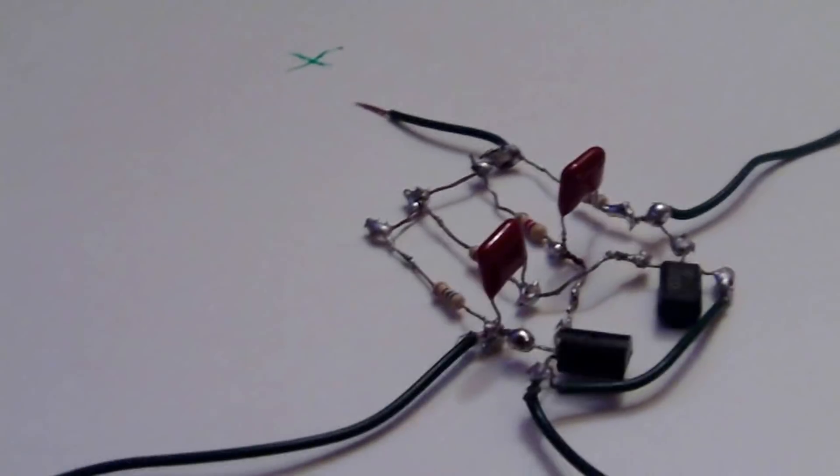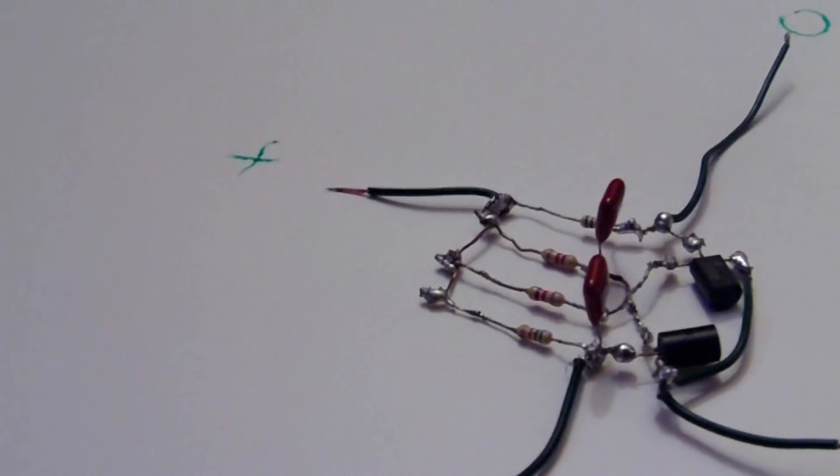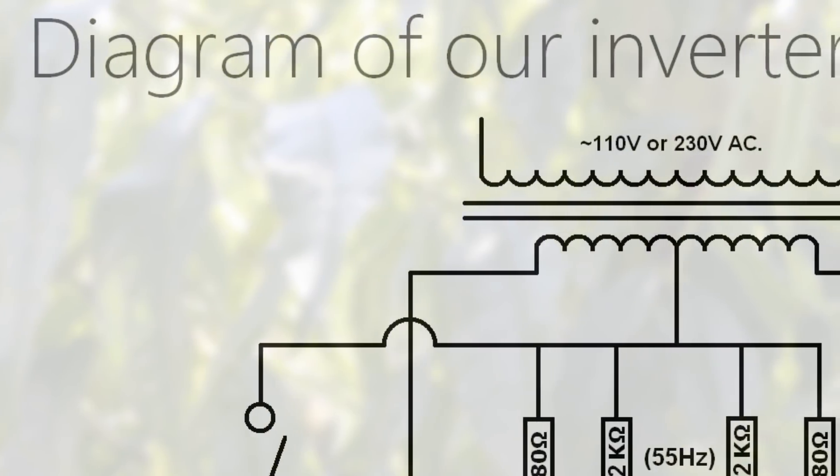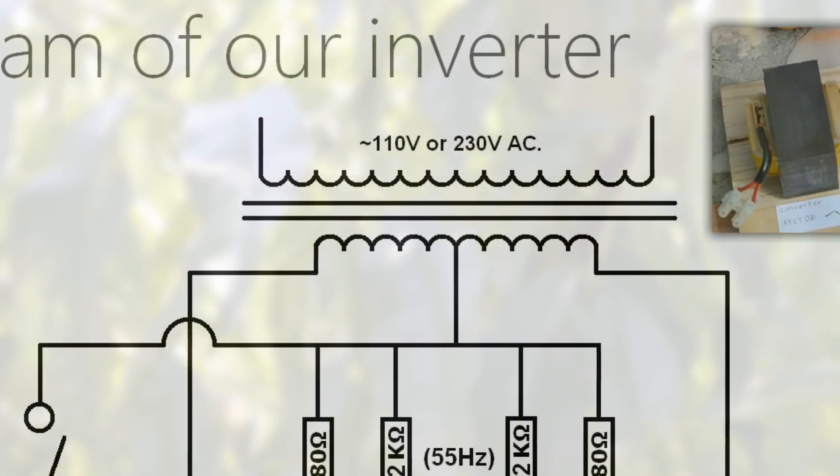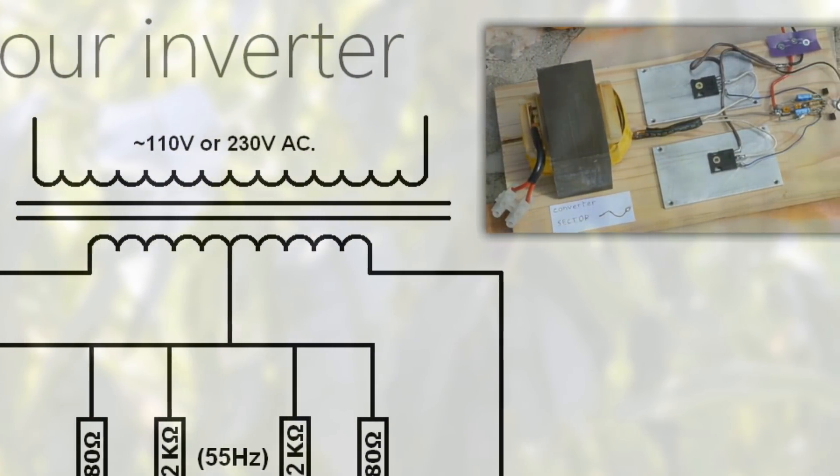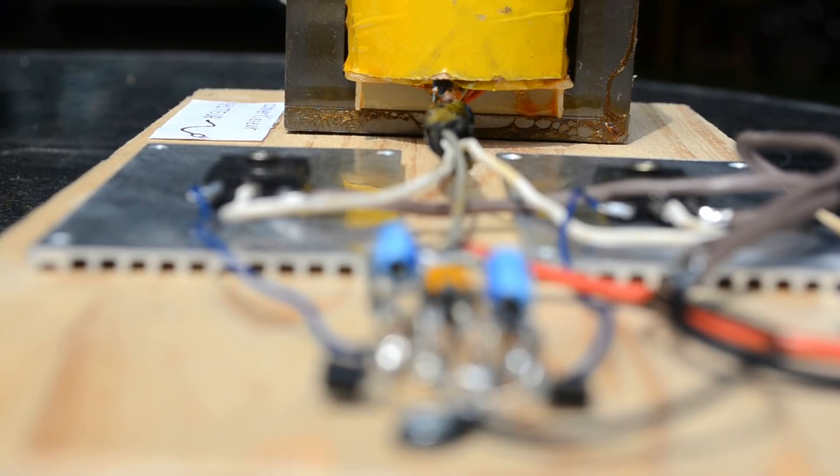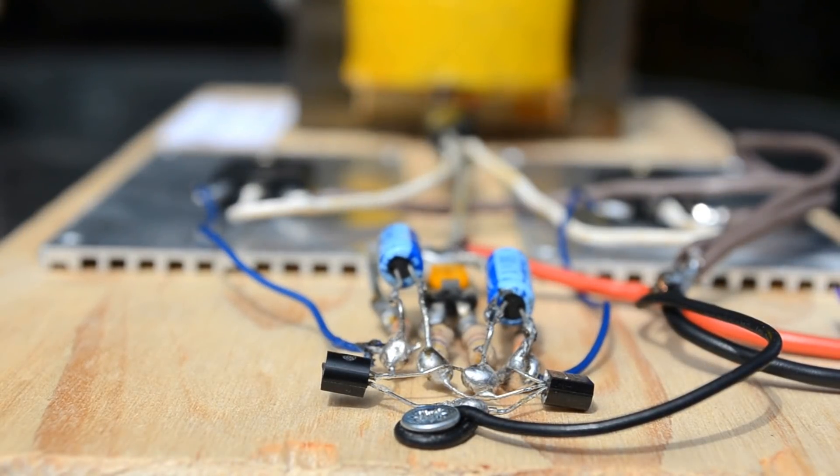To have a 50 or 60Hz frequency, the mains frequency, we will give the specifications of the capacitors and resistors that we use at the end of the video. It consumes 13mA under 12V.